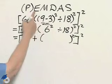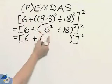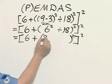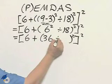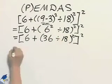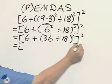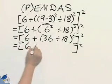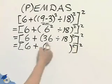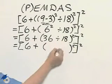Look at that exponent within there. I have to do that. This means six times six, getting closer, 36 divided by 18.